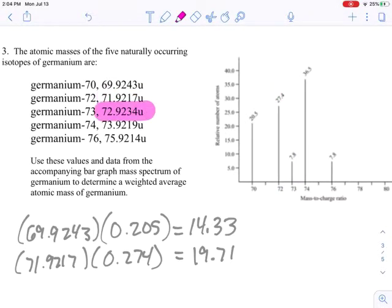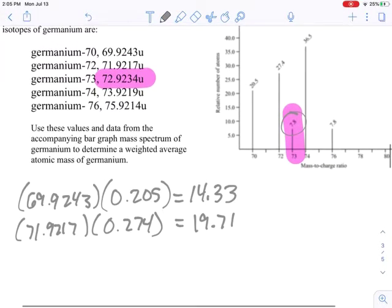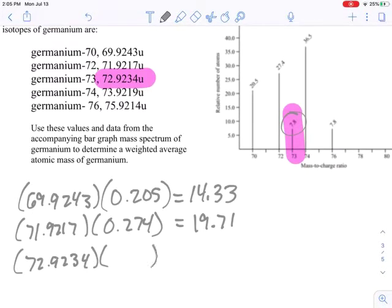Our next one is number 73. So that's 7.8%. That's 72.9234. Remember, you have to move the decimal place twice, so that would make it 0.078. You'll end up with the wrong number if you don't decimalize it appropriately. So that's 5.69.